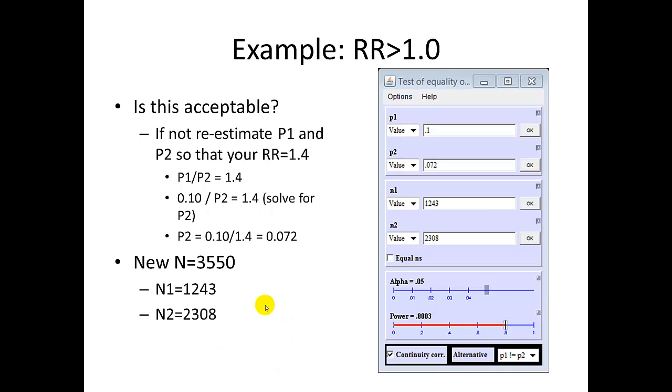Think about whether this is acceptable to you. In other words, if your study yielded an effect estimate of 1.4, would you believe this to be clinically significant and also want it to be statistically significant? If so, then you would need to re-estimate your sample size now so that your study would find 1.4 to be statistically significant. To do this, solve for P2 and then recalculate N1 and N2 so that the power is 80%. In this example, we would have to increase our sample size total to 3,550 in order to get an estimate of power of 80%.